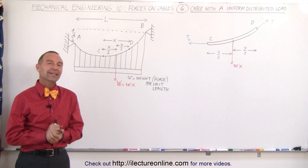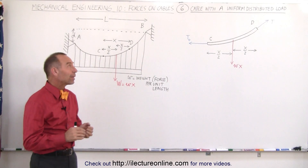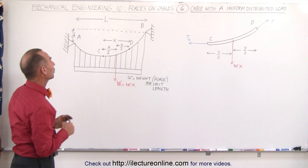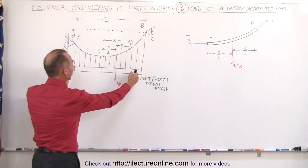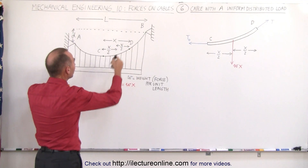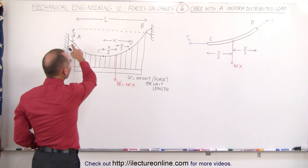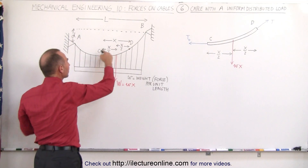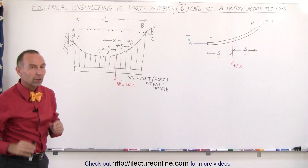Welcome to ElectronLine. Let's take a look at an example where we have a uniform distributed load. For example, there's a bridge section supported from the cables that are attached to the main cable right here that supports the whole structure.